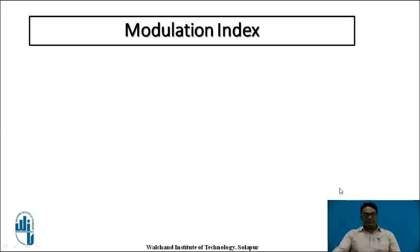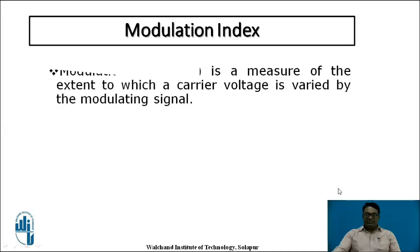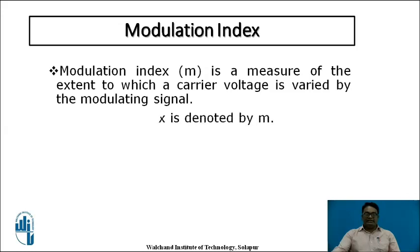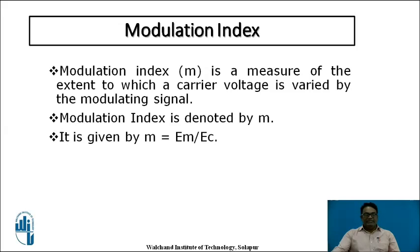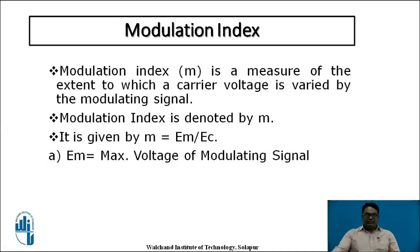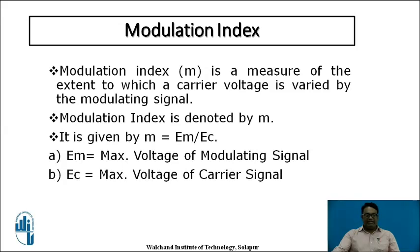The modulation index is the measure of the extent to which the carrier voltage is varied by the modulating signal. It is denoted by small m and given by the equation m = EM / EC, where EM is the maximum voltage of the modulating signal and EC is the maximum voltage of the carrier signal. It can also be expressed in terms of Emax and Emin.